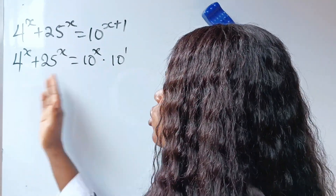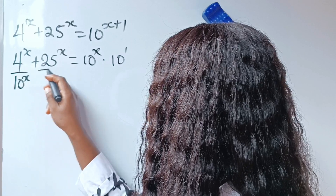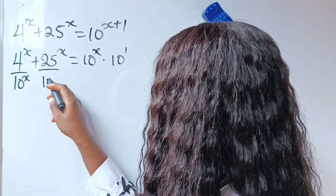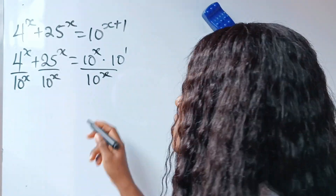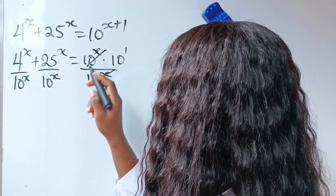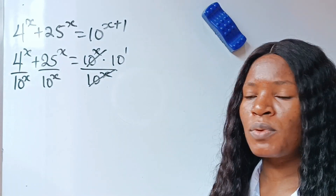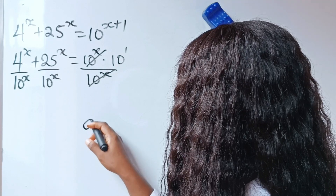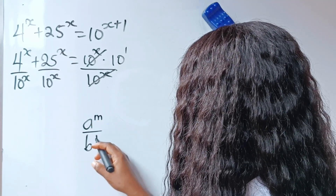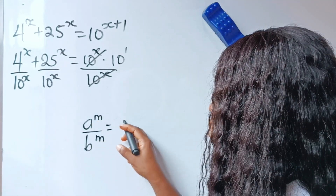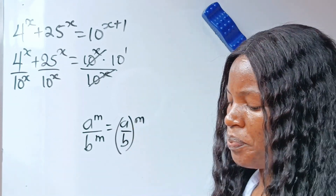So we are going to divide through by 10 to the power of x — divided by 10 to the power of x, divided by 10 to the power of x. Another law of exponents we are going to consider is the one that states that a to the power of m divided by b to the power of m is equal to a divided by b raised to the power of m.